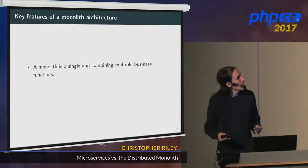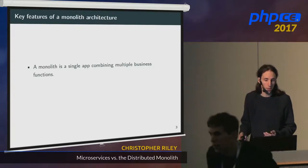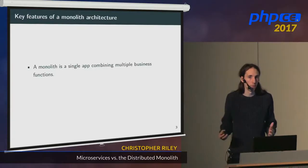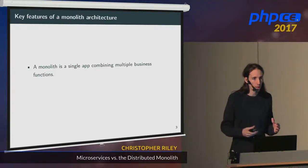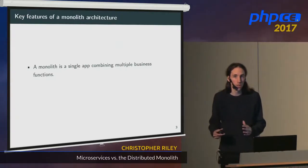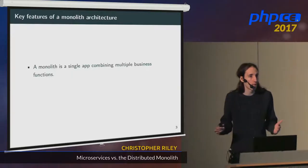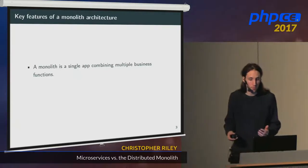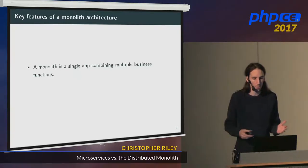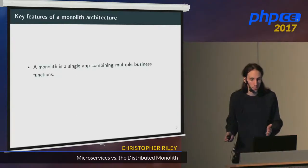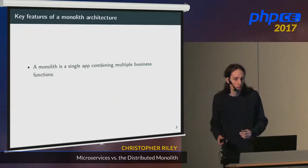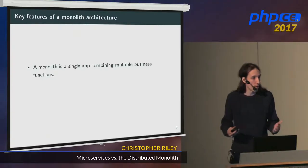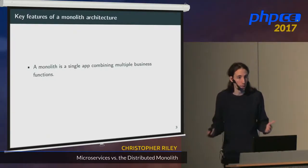One of the key features of a monolith architecture is it's a single application containing multiple different business functions. An organization will probably just have a single massive monolith which covers all the IT needs for the organization. A monolith is also often seen as a derogatory term — some legacy software which has maybe a bad design or is based on outdated methods. But that doesn't have to be true. It's perfectly possible to build a good application using a monolith architecture.